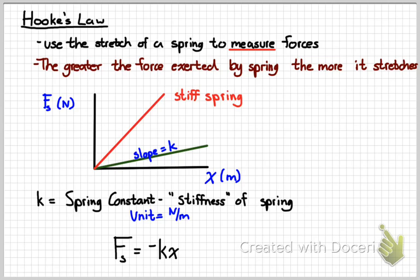The unit for the spring constant would be newtons per meter. And Hooke's Law can be expressed as an equation where the force of the spring is equal to K times X. The negative sign is just put in there to indicate that the stretch of the spring is always in the opposite direction as the force the spring exerts. Pull a spring to the right, it's going to exert a force.